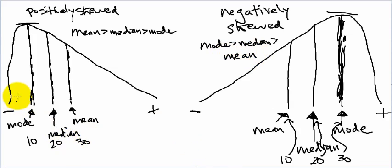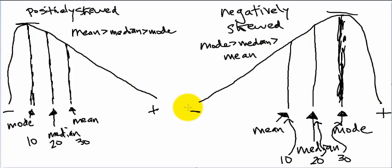That's it for positively skewed and negatively skewed distributions. This shows the relationship between the three measures of central tendency.